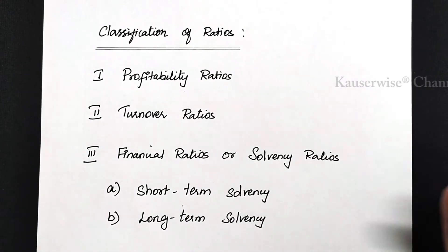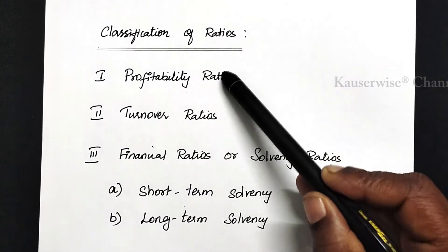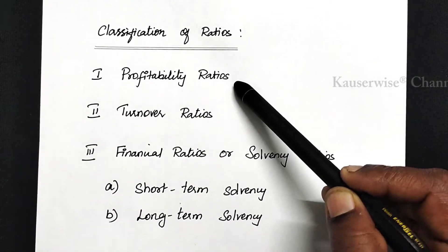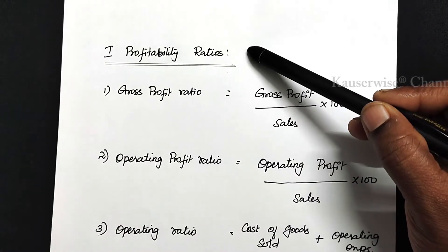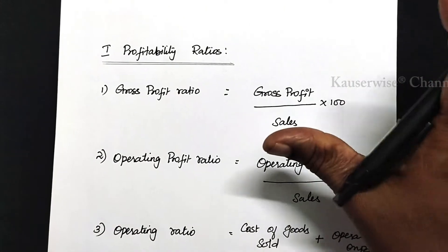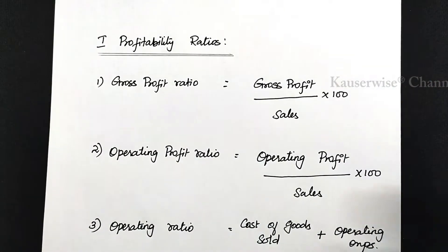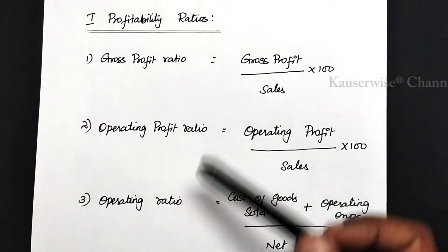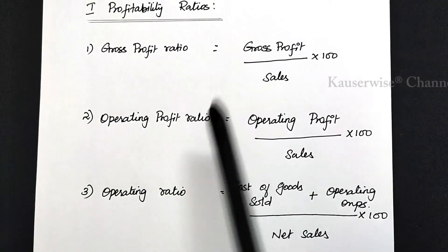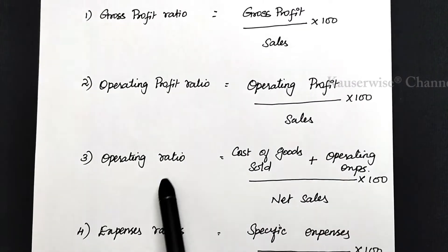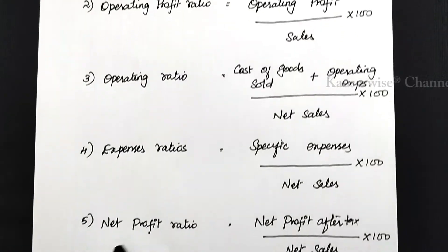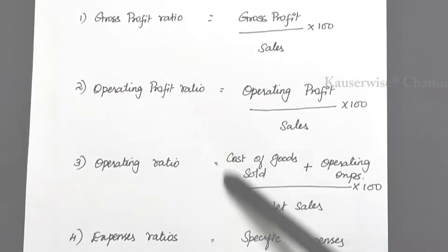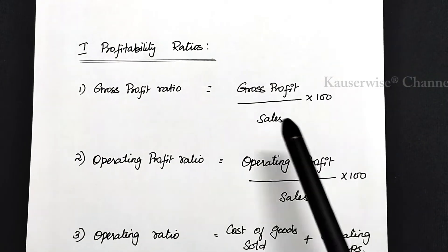Let us see the different formulas which come under each classification. The first category is profitability ratios. In profitability ratios, there are nearly 15 formulas, but I have taken the first five. These five profitability ratios based on sales are: gross profit ratio, operating profit ratio, operating ratio, expenses ratio, and net profit ratio.